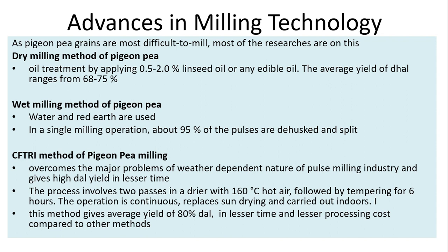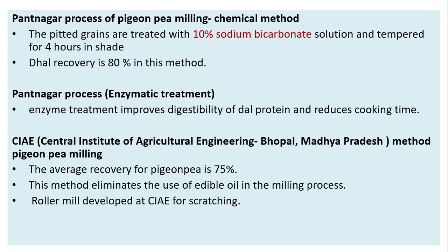Parnakar process of PGNP milling involves two methods. Chemical method: the pitted grains are treated with 10 percent sodium bicarbonate solution and tempered for four hours in shade; dal recovery is 80 percent. Enzymatic treatment: enzyme treatment improves digestibility of dal protein and reduces cooking time.